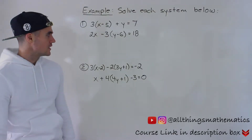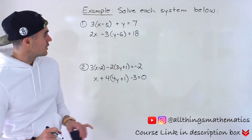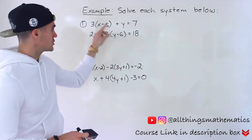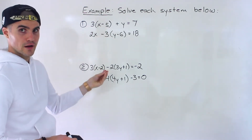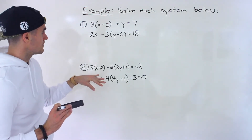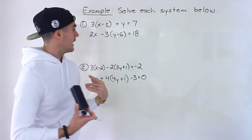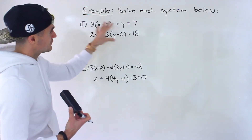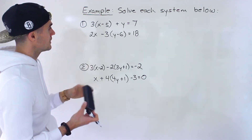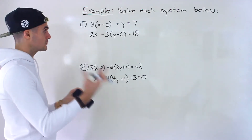Welcome back everyone. Moving on to another question dealing with substitutions. We have to solve each of these systems below. We're given two lines and we've got to find the point of intersection between them. Notice that these are in unique formats with a lot of brackets. The first thing you want to do with this kind of question is simplify each equation first before doing any substitution — get rid of brackets, apply the distributive property, then simplify like terms.